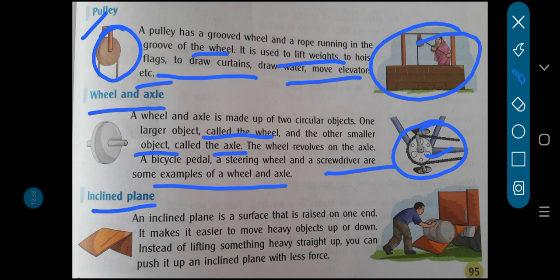Now the next one is inclined plane, children. What do you mean by inclined plane? You must have seen this but maybe didn't know it's called an inclined plane. An inclined plane is a surface that is raised on one end. It makes it easier to move heavy objects up or down. Instead of lifting something heavy straight up, you can push it up an inclined plane with less force. It helps make your work easy and reduces the force and energy you need to apply.